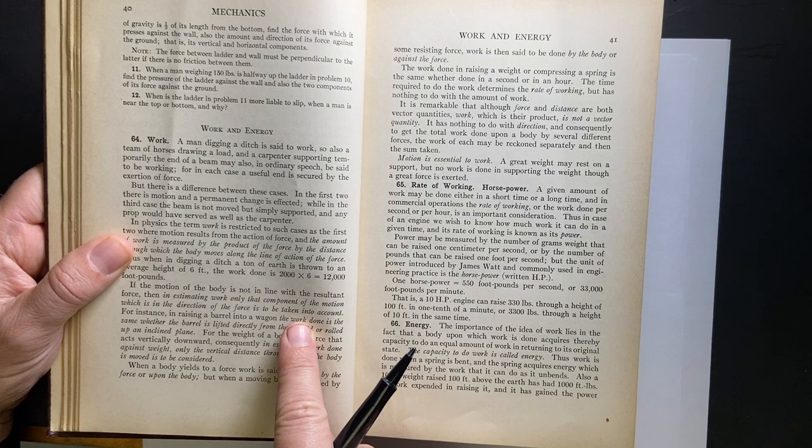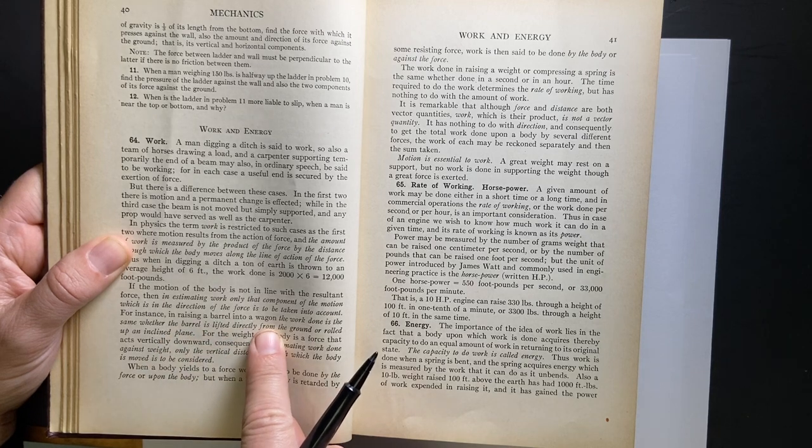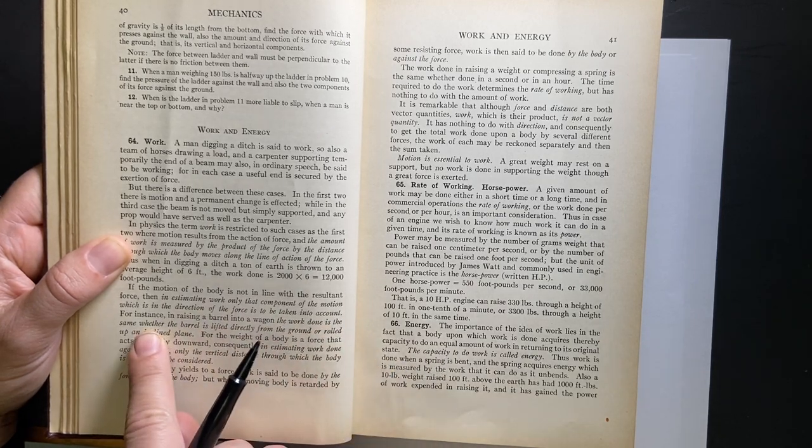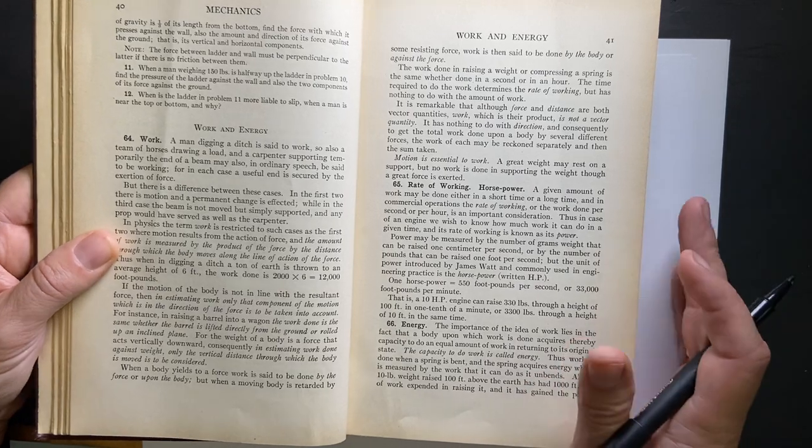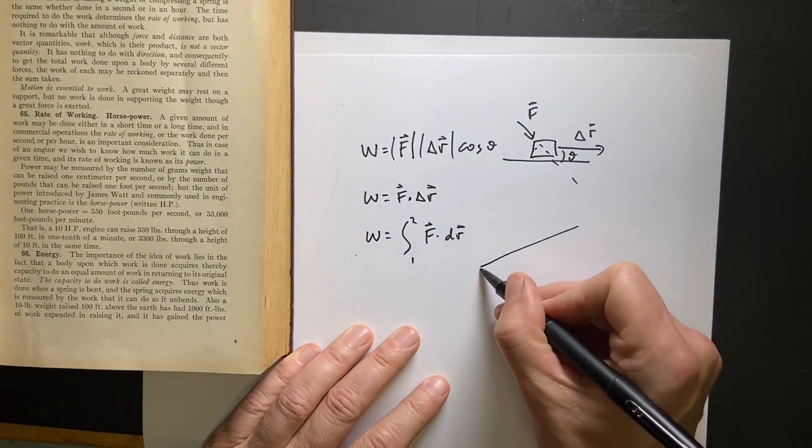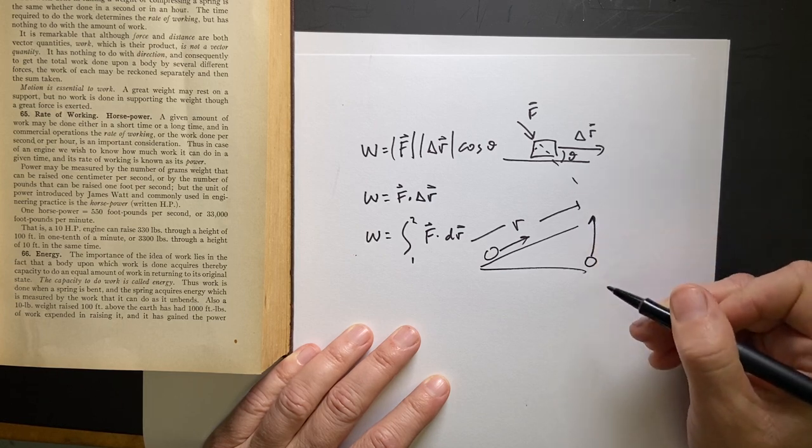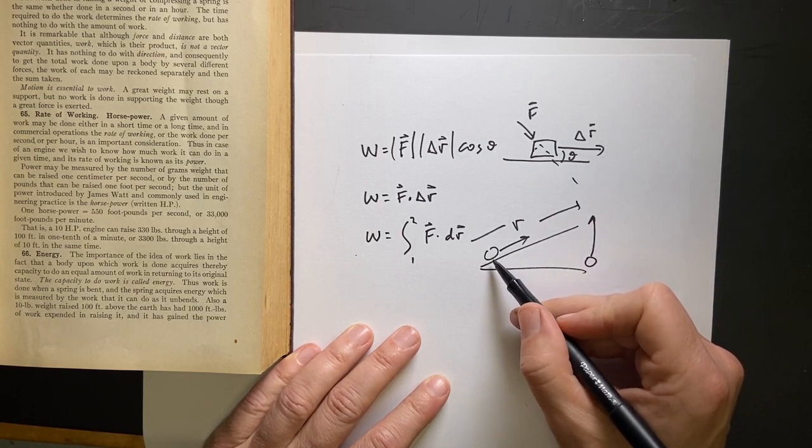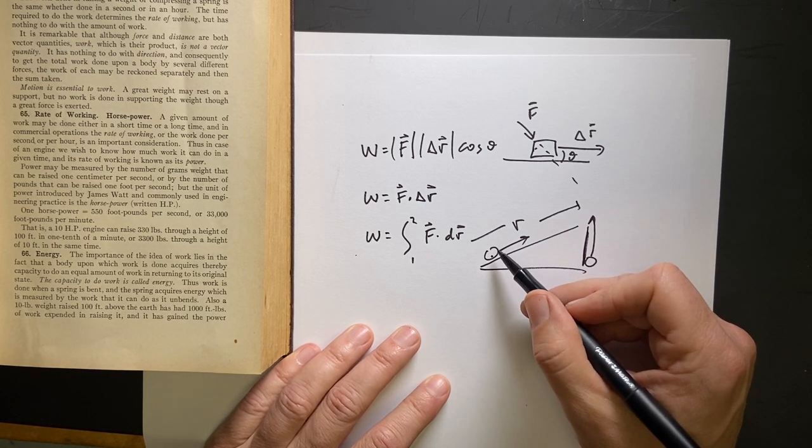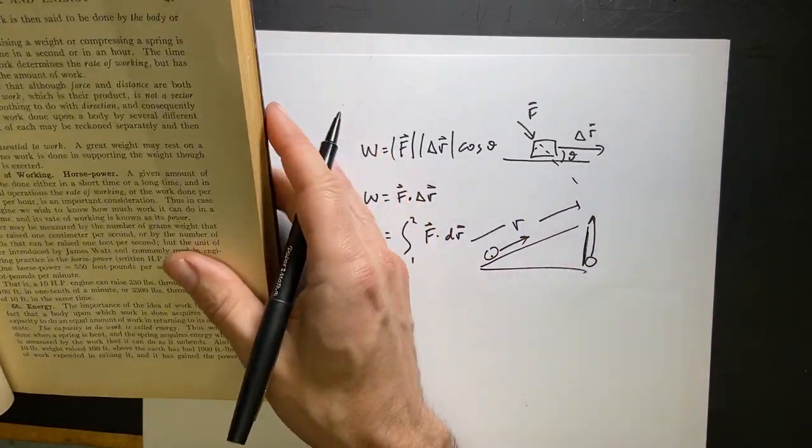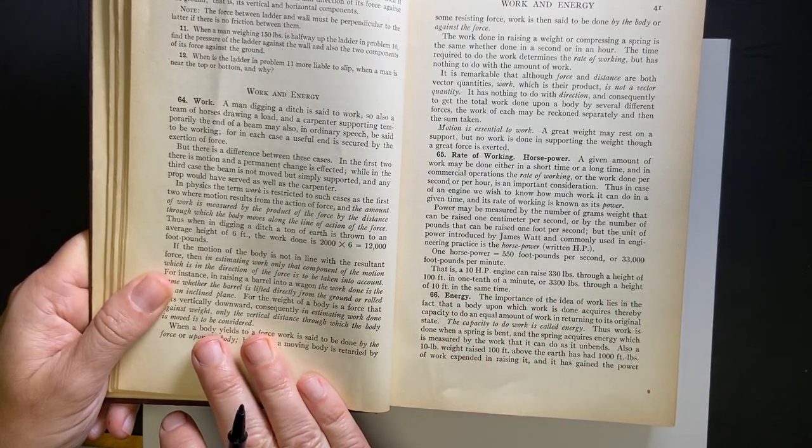So here they say the direction of the force is important. Raising a barrel into a wagon, the work done is same whether the barrel is lifted directly from the ground or rolled up in an incline. That's true, but why isn't so trivial. If I move a barrel this way over a greater distance, or if I just take that same barrel and lift it straight up, it's the same amount of work. And that's because this is the same as the component of force that you'd have to push in the direction of motion here because of the angles. They just say it in words. They don't really do it as an equation, which is kind of, maybe it's harder to write equations.